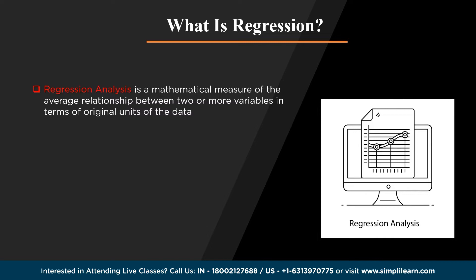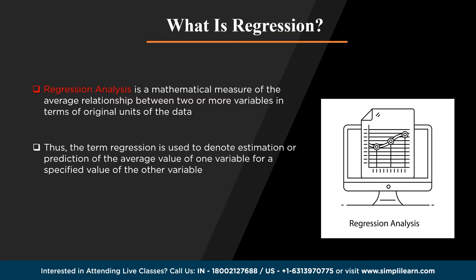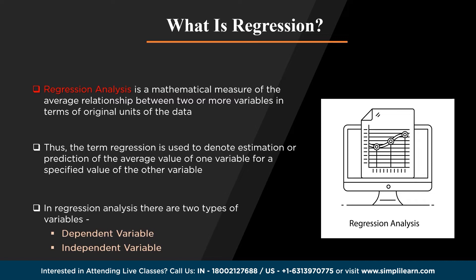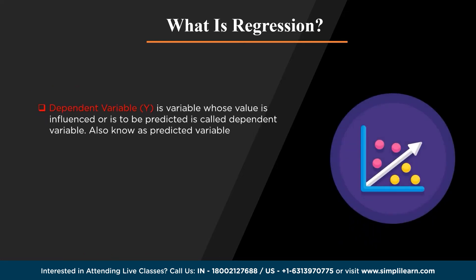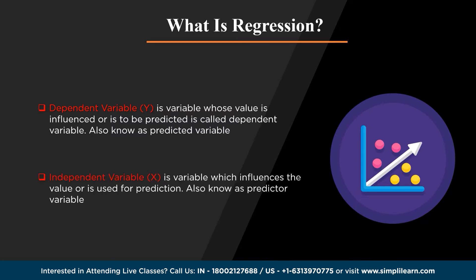What is regression? Regression analysis, like most multivariate statistics, allows you to infer that there is a relationship between two or more variables. These relationships are seldom exact because there is variation caused by many variables, not just the ones being studied. In regression analysis, there are two types of variable: dependent variable and independent variable. A dependent variable is one whose value is influenced or is to be predicted, often denoted by y. An independent variable, denoted by x, is one which influences the value or is used for prediction.